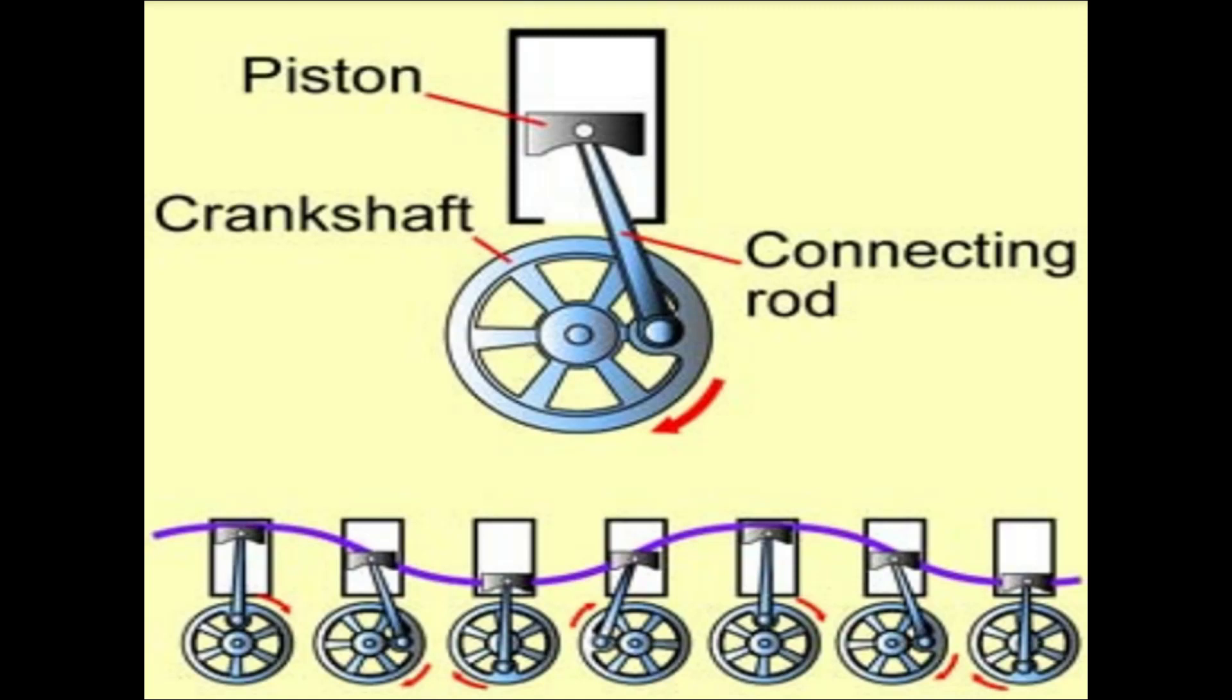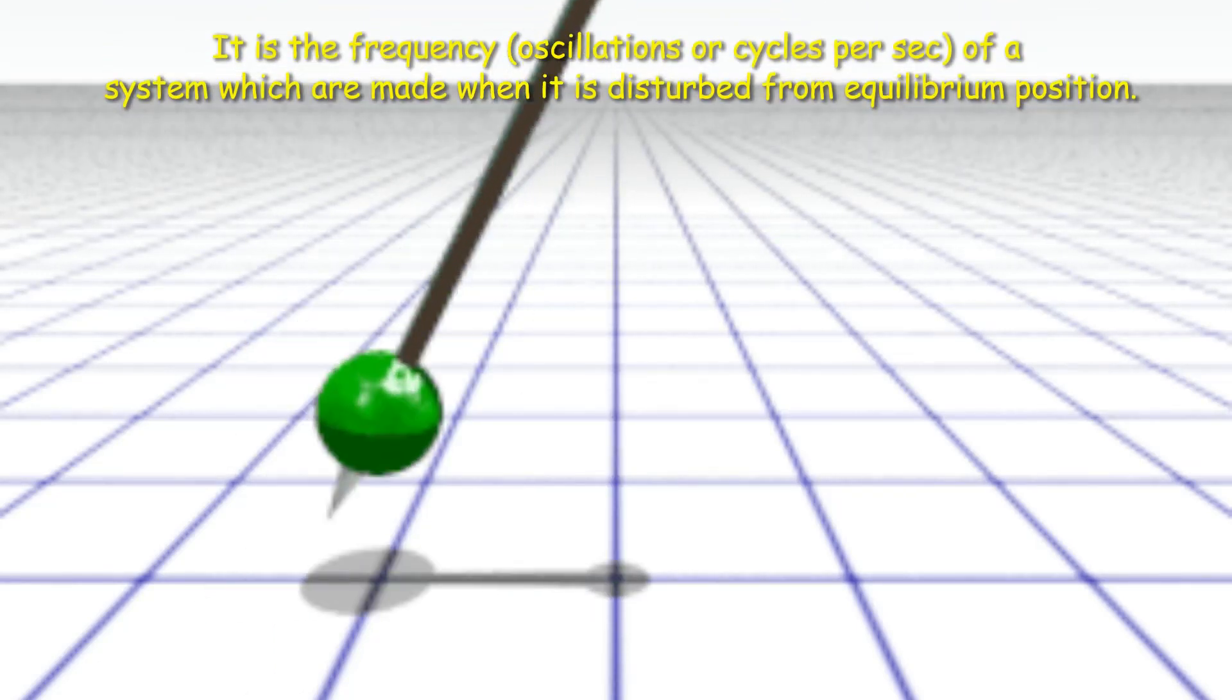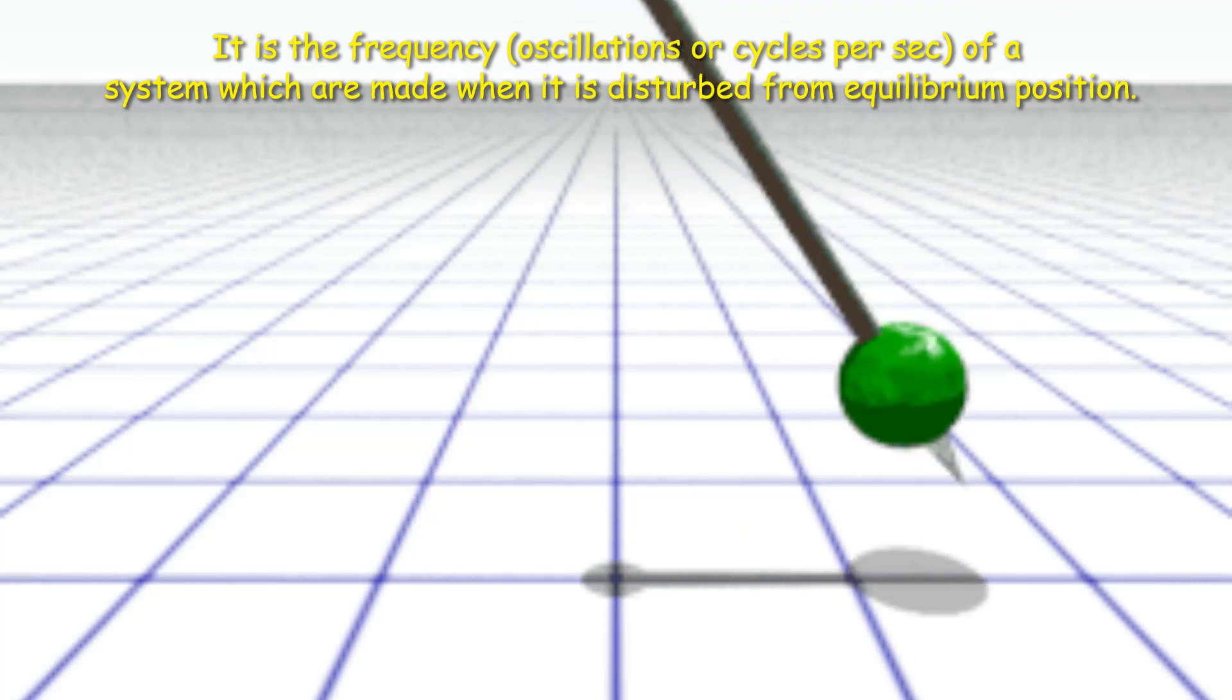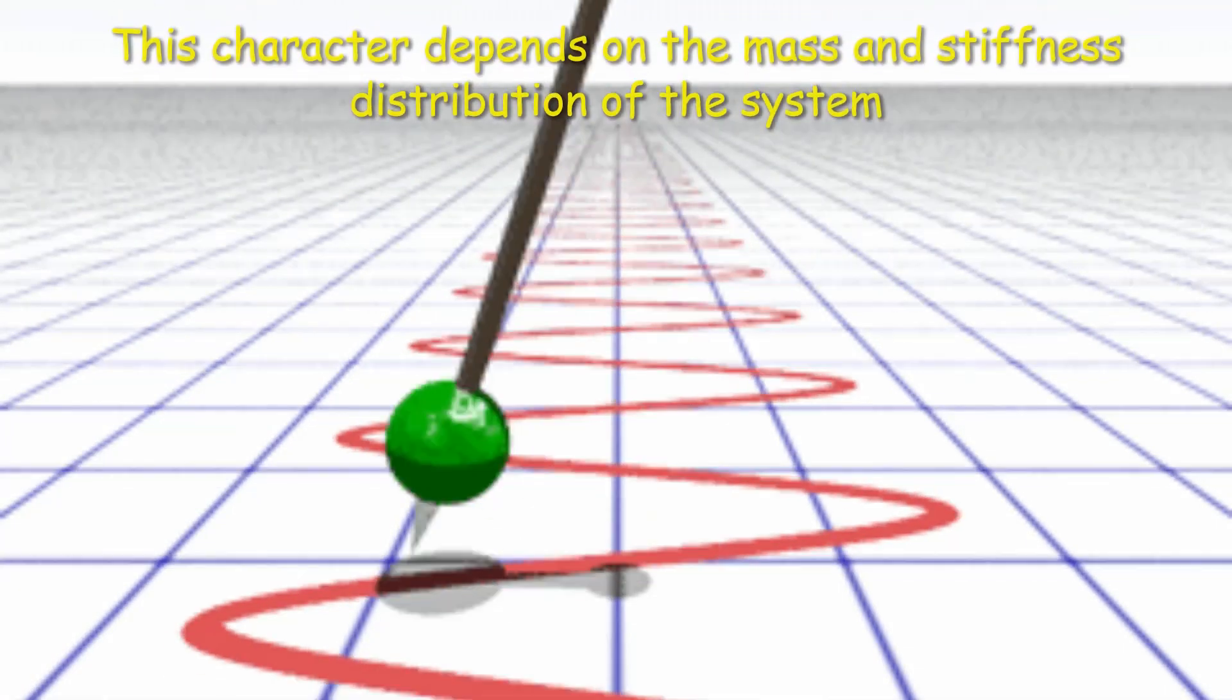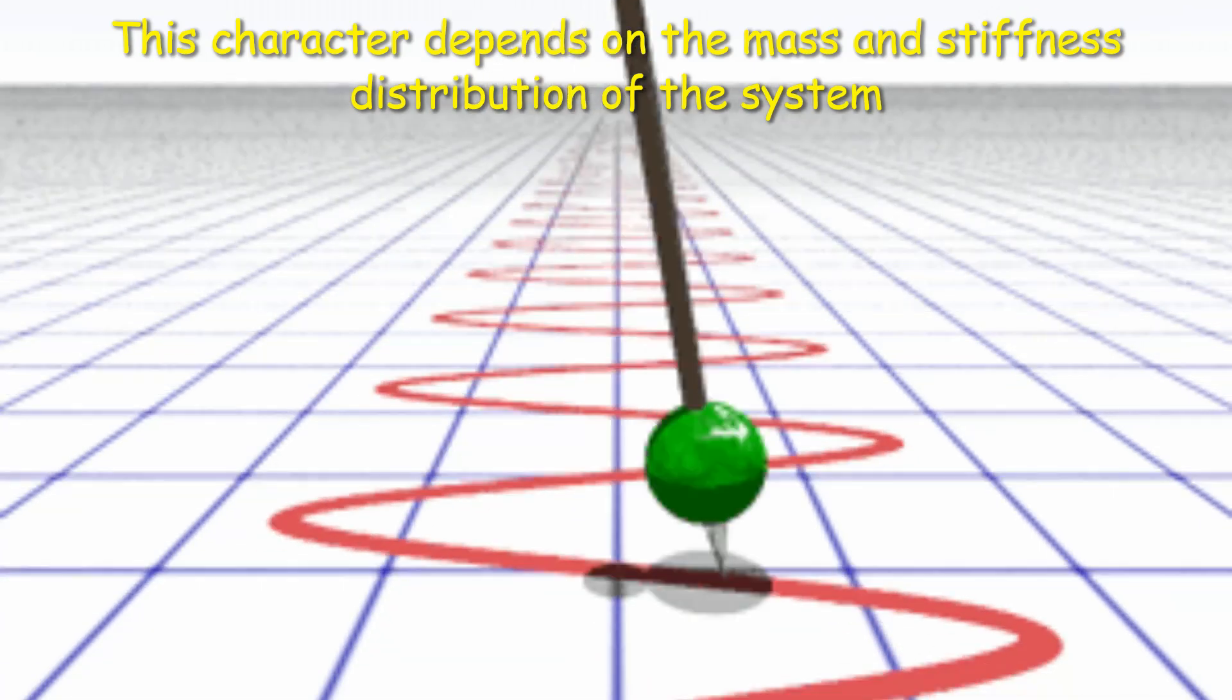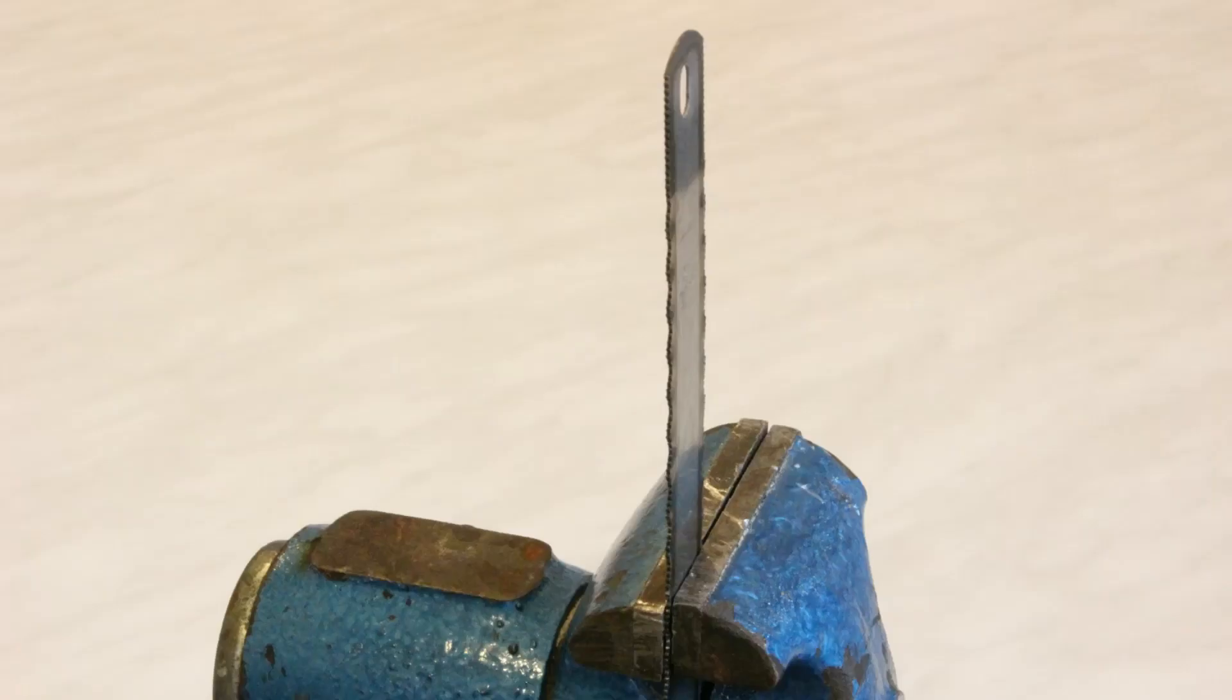Then what is the natural frequency? It is the oscillations which are made by a system when it is disturbed from its stable position. This characteristic depends on the mass and stiffness distribution of the system. In order to understand the concept of natural frequency, now we will consider the following demonstration.